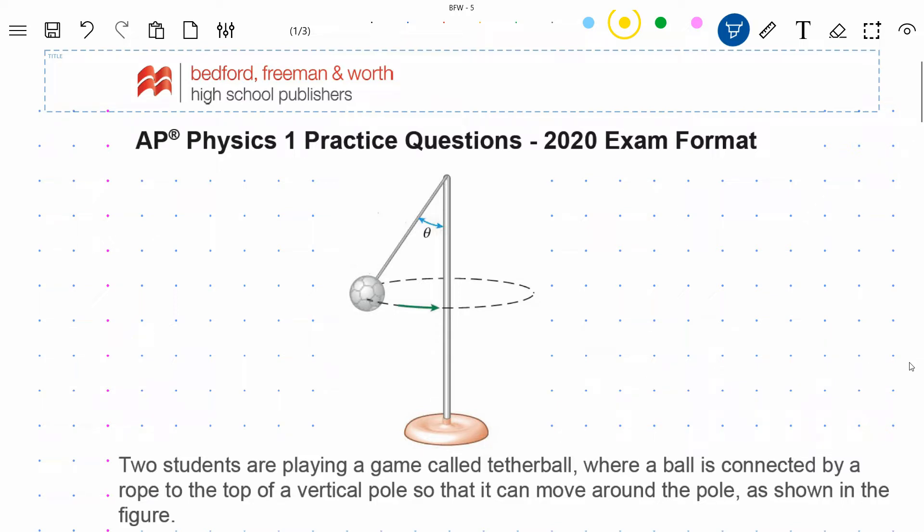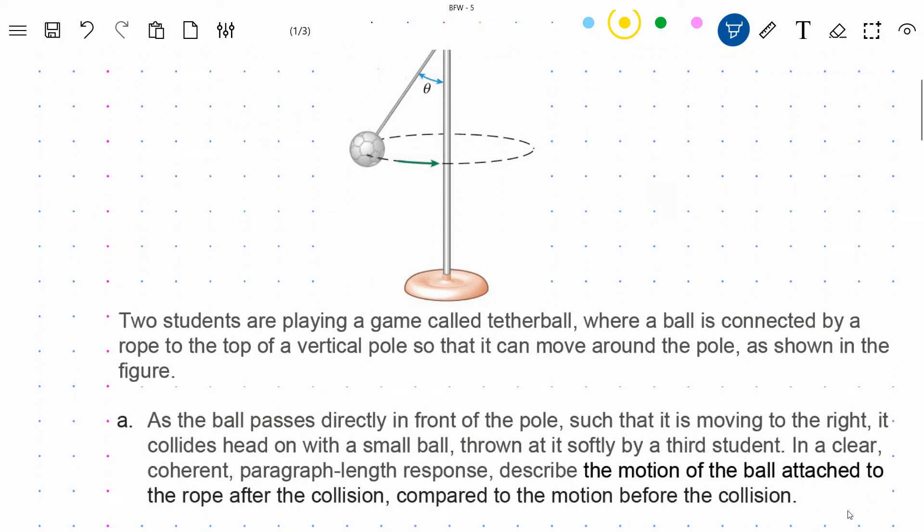So when I first saw this picture, the thought that came to my mind was that this is essentially what can be called a conical pendulum. Think of it as an object here. Usually a pendulum just swings back and forth along essentially a two-dimensional plane, but this object is moving in the third dimension. It's actually moving away from us. So this sweeps out the shape of a cone if you consider the rope and all. In any case, I just thought I'd mention it because that's what you may hear it referred to in the future. In this question, we're described the following: Two students are playing a game called tetherball, where a ball is connected by a rope to the top of a vertical pole so that it can move around the pole as shown in the figure. So yes, that's essentially what we've just seen and I've described as a conical pendulum.